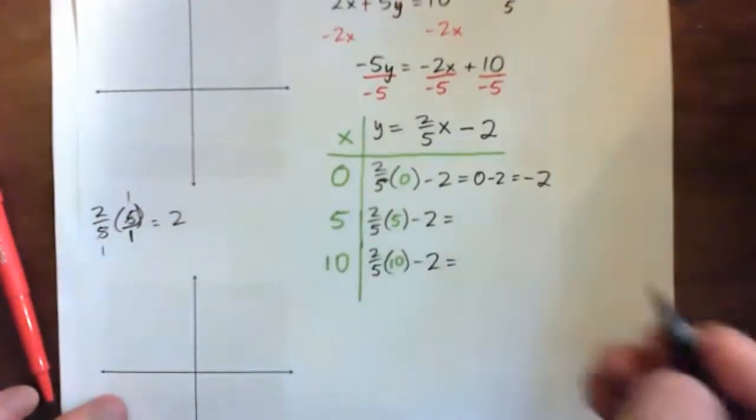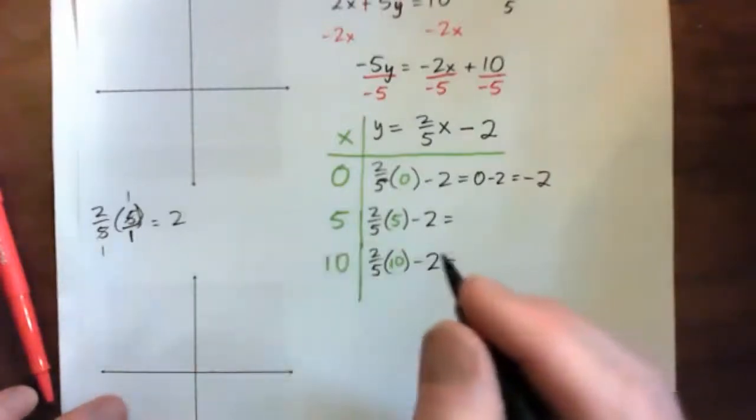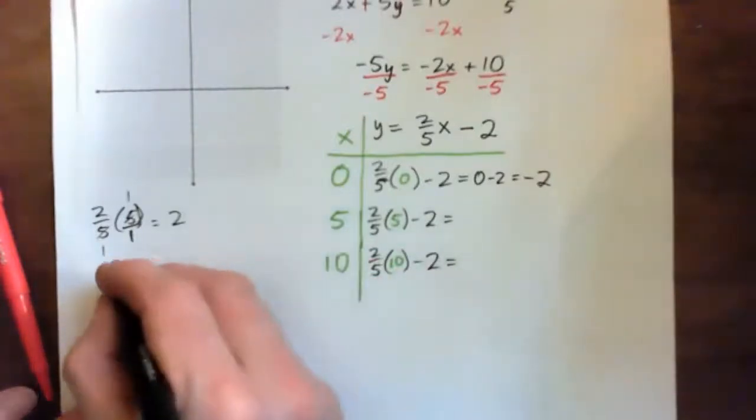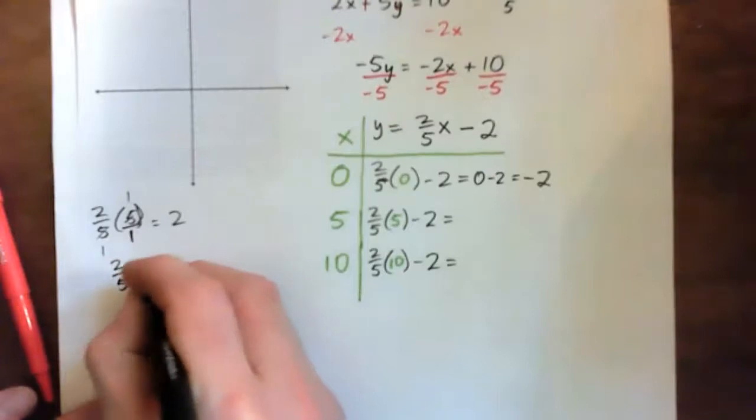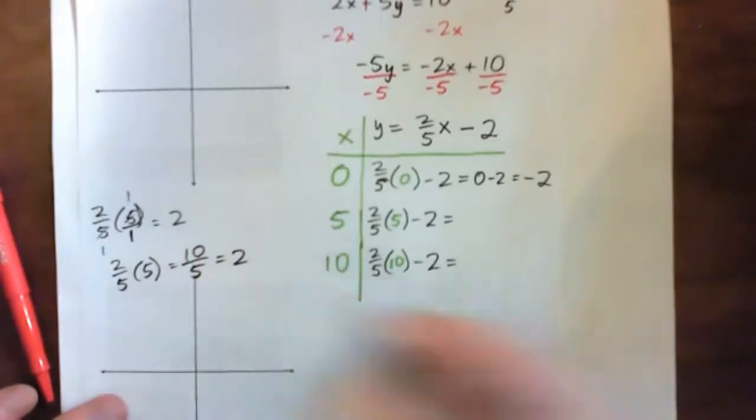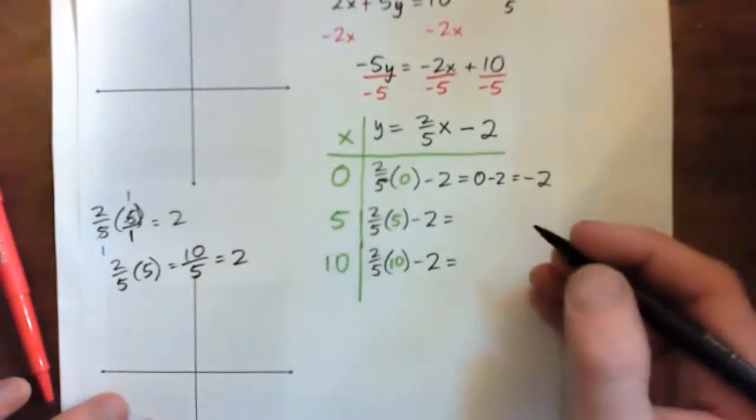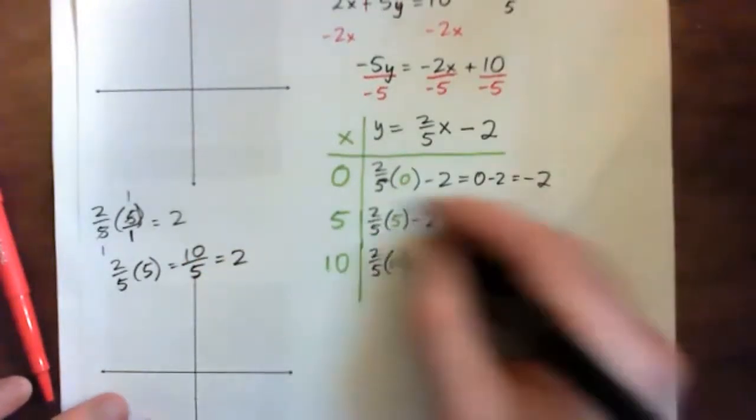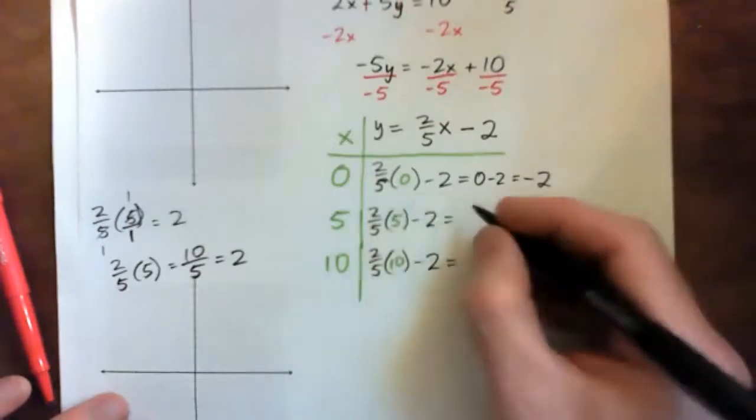You can write that as 5 over 1. And then the 5s cross cancel. And we're just left with 2. Or it could be, okay, 2 fifths times 5. 2 times 5 is 10. 10 over 5 gives 2, right? So, I'm just going to do it that way. I think students might like to do that. I don't know. 2 times 5.